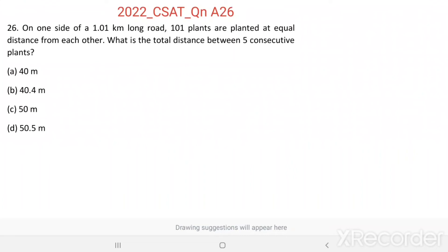Question 26. On one side of a 1.01 km long road, 101 plants are planted at equal distance from each other. What is the total distance between 5 consecutive plants?